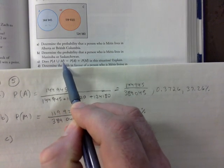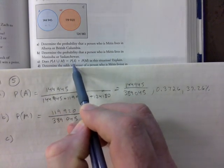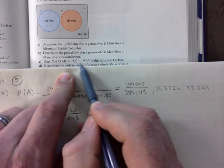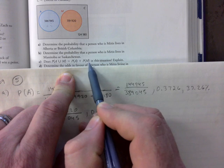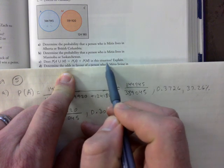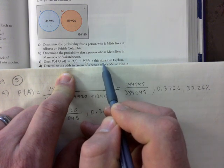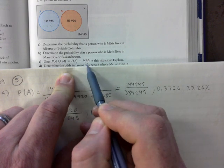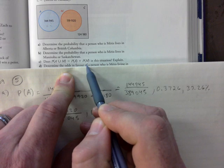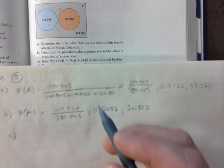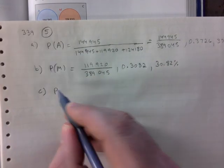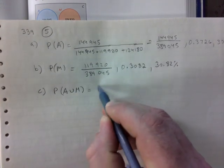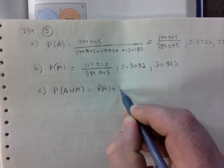Part C is asking, does A union M - is that gonna be P(A) plus P(M) in this situation? Yes, we do not worry about the both parts because there is no overlap. So this is basically asking, are events mutually exclusive?